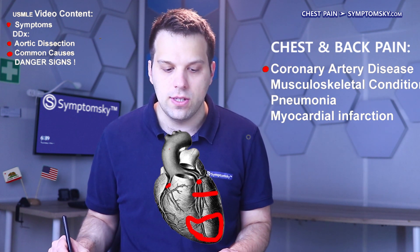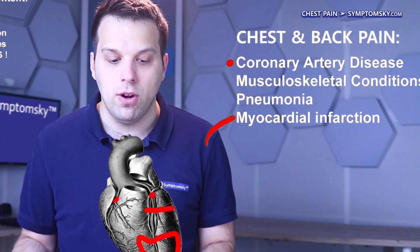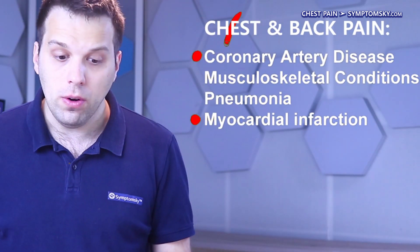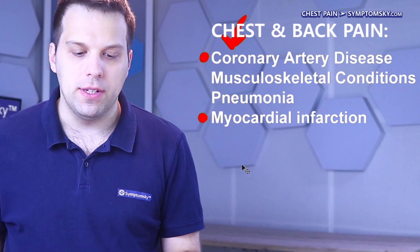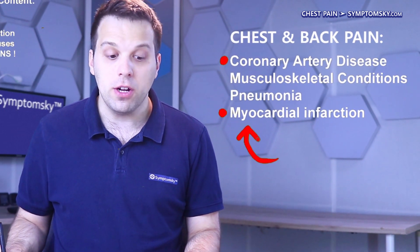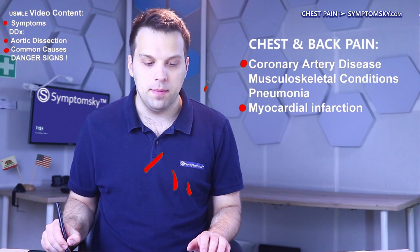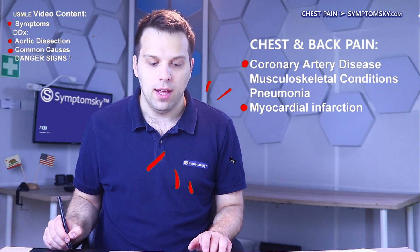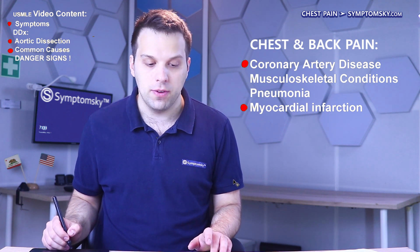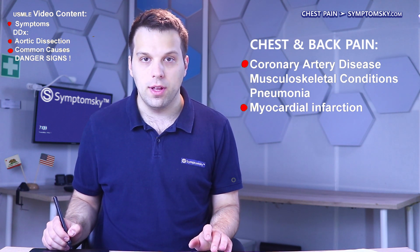Coronary artery disease comes with blood clots in the coronary arteries. If a blood clot breaks free, it can completely block the artery and cause death of the myocardium — the tissue of the heart. This is known as myocardial infarction. Both coronary artery disease and myocardial infarction can cause chest pain and back pain, and it can be hard to distinguish one from another.